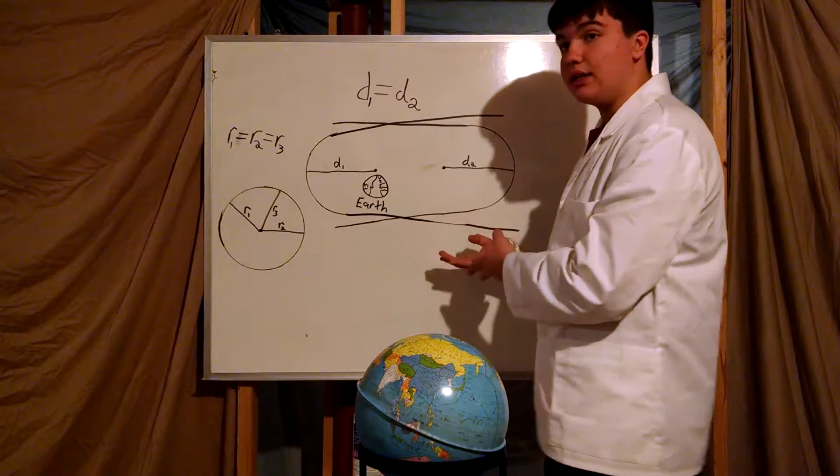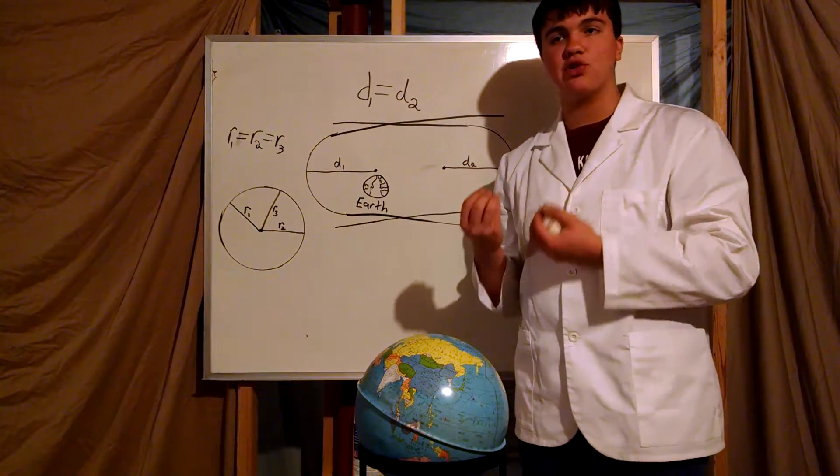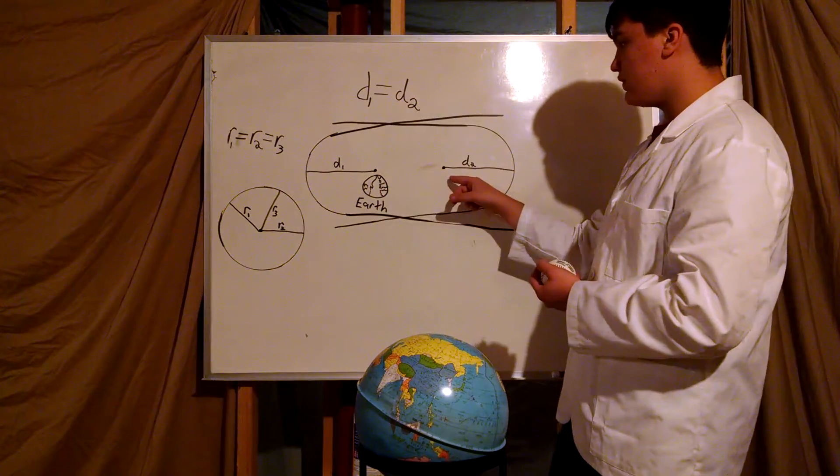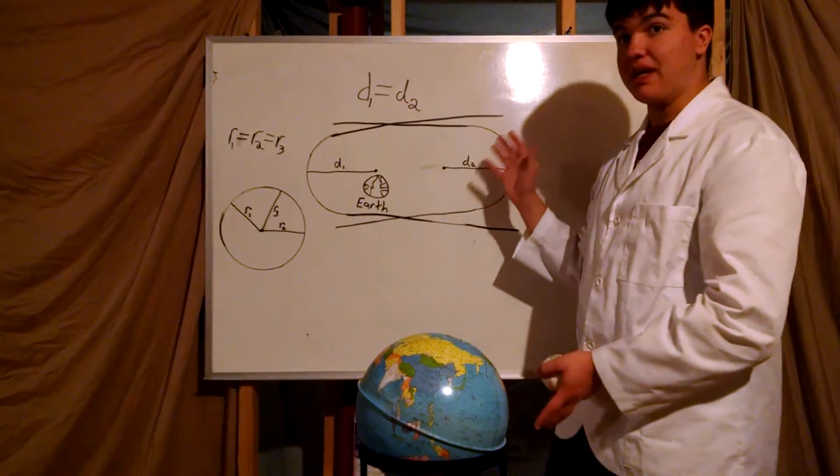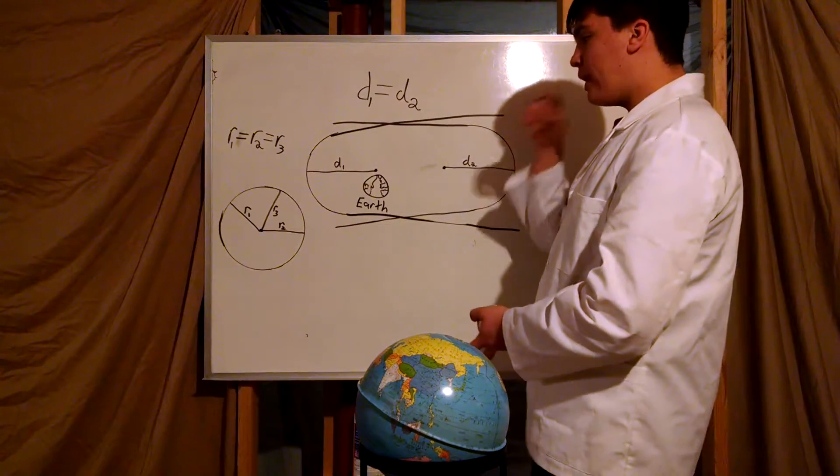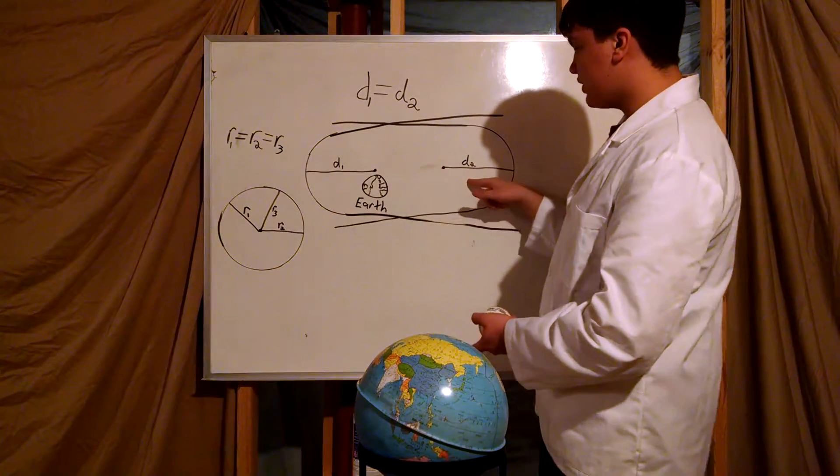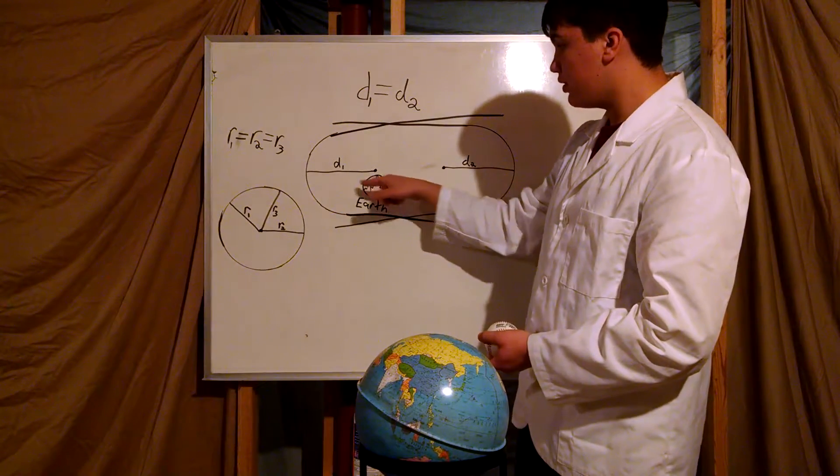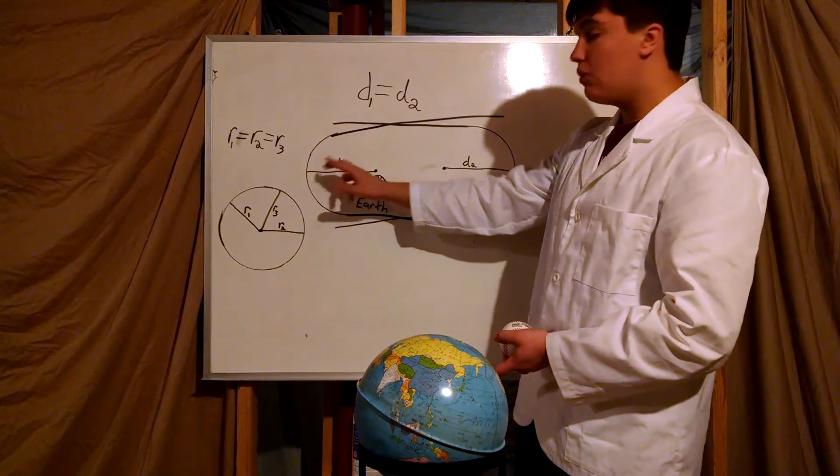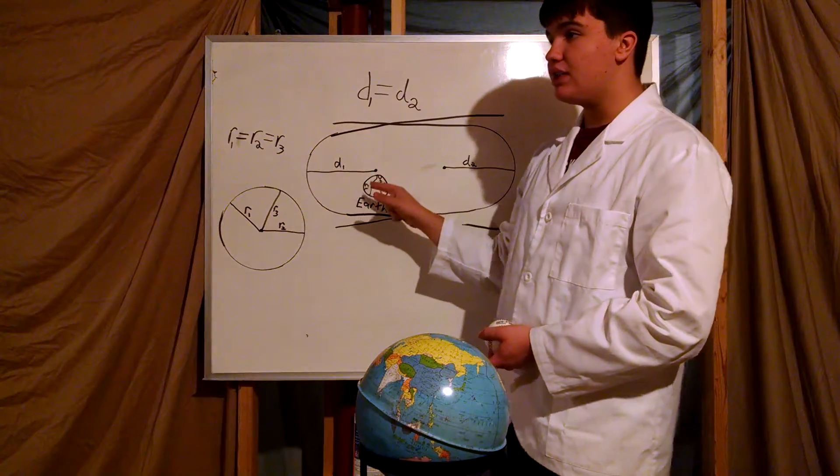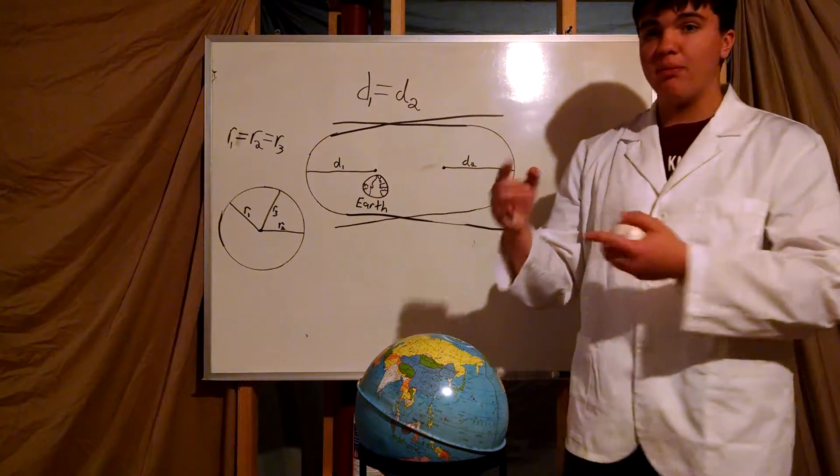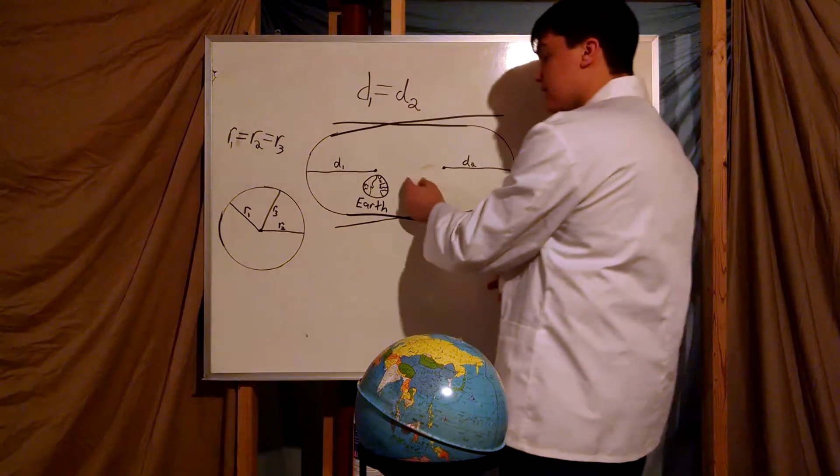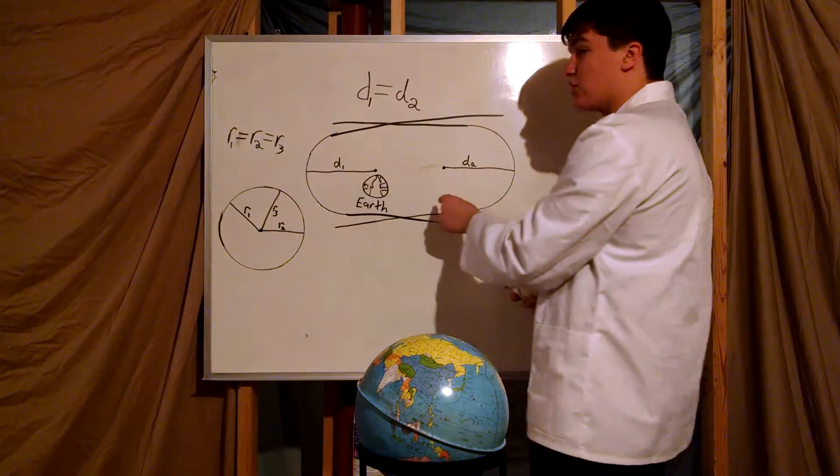But in an ellipse, that's not true. Earth is one of the foci. The other foci is somewhere out in space. Now, d1 is equal to d2. So the distance from Earth to the moon, which is the closest the moon can be, is equal to over here. But what makes this a micromoon, which would be out here, is this distance in here, the distance between the two foci.